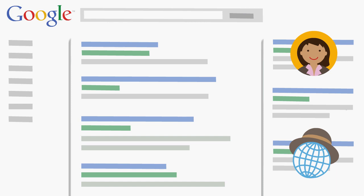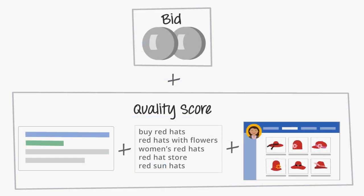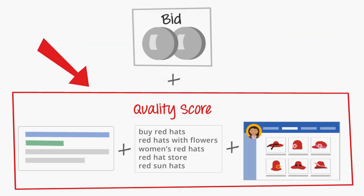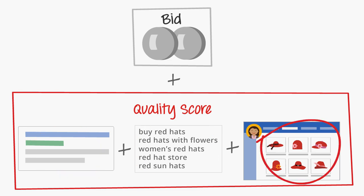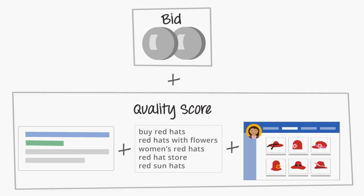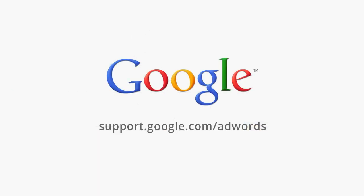To increase your ad's chance of ranking high, you'll want a competitive bid and a high quality score. That means a great ad, great keywords, and a relevant landing page. You can find more information about ad rank, bidding, and improving your quality score in the AdWords Help Center.